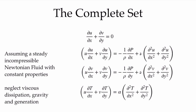Dividing through by the density, the viscosity over density gives the kinematic viscosity nu. Dividing the energy equation through by rho cp gives the thermal diffusivity alpha on the conduction term. The form of these equations is very similar, with the extra appearance of the pressure gradient in momentum. The coefficient multiplying the viscous term is the kinematic viscosity, while the coefficient multiplying the conduction term is the thermal diffusivity alpha.